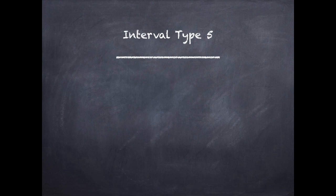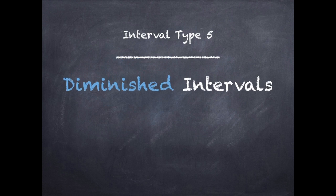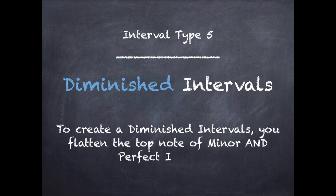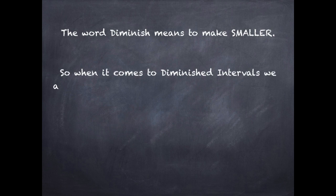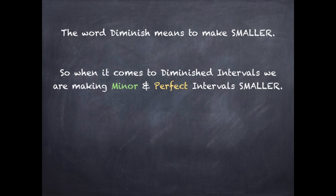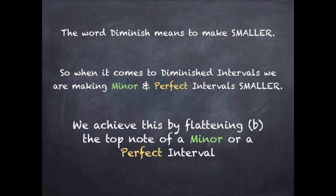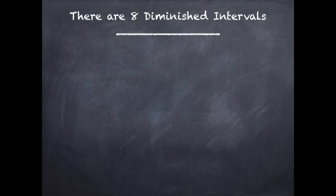Interval type 5: diminished intervals. To create a diminished interval, you flatten the top note of minor and perfect intervals. The word diminish means to make smaller. So when it comes to diminished intervals, we are making minor and perfect intervals smaller. We achieve this by flattening the top note of a minor or a perfect interval. There are eight diminished intervals.